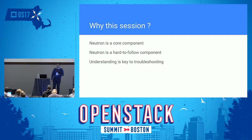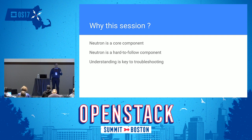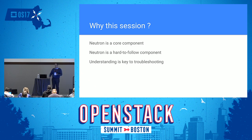It's a very hard-to-follow component. There are lots of pieces that form Neutron: L3 agent, ML2 agent, DHCP agent, Neutron server, metadata agent, and so on. There are lots of Linux native technologies involved to make it happen. You have to know TAP devices, VEth pairs, Linux bridge, OpenVSwitch, and network namespaces. You have to understand all of that — otherwise, any problem that happens, there's no way you can fix it or even find where it sits.